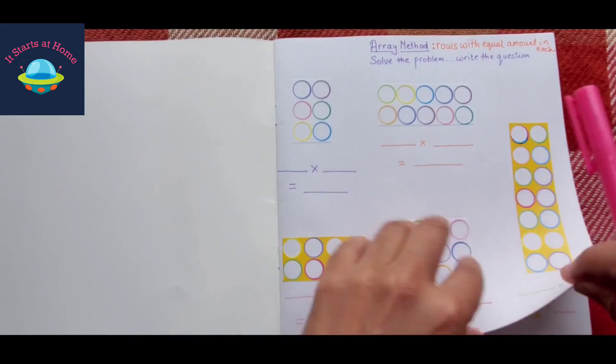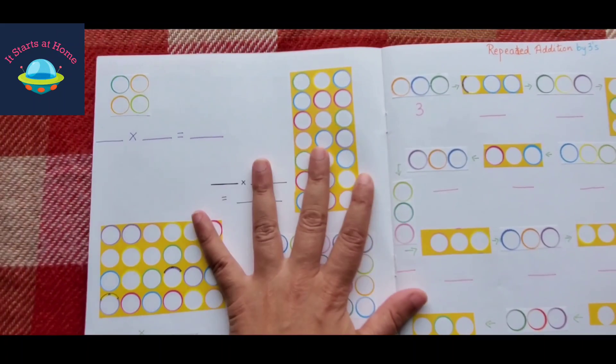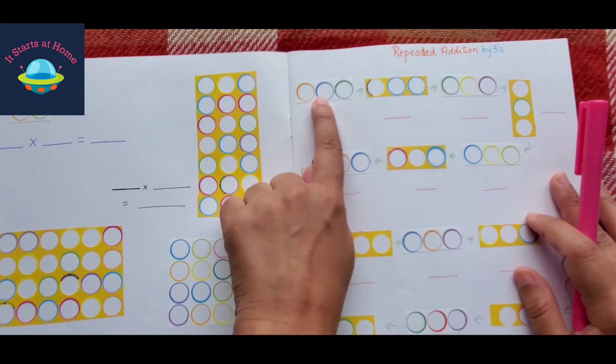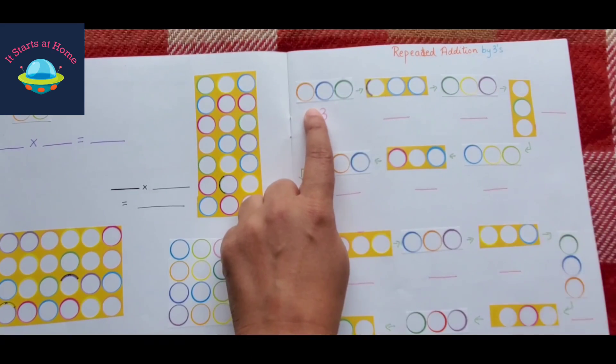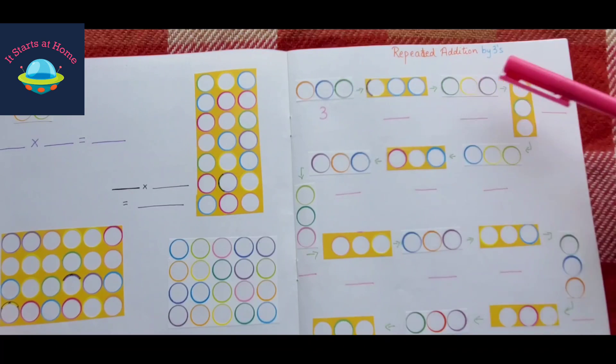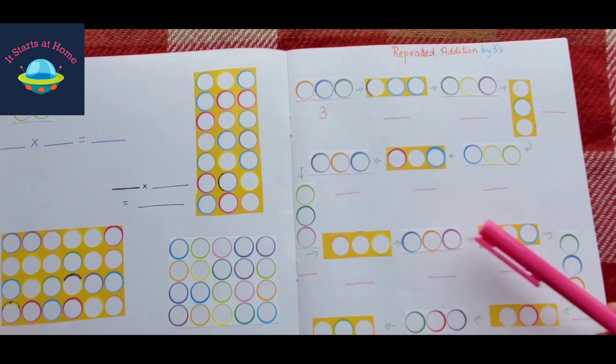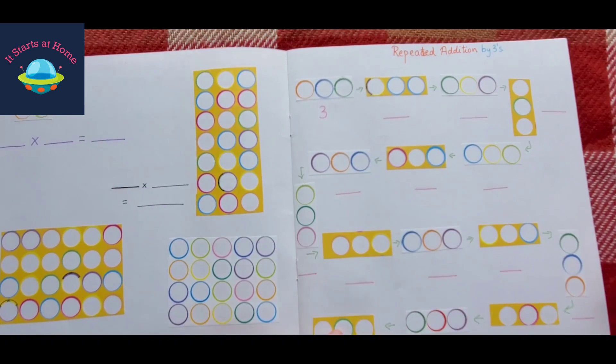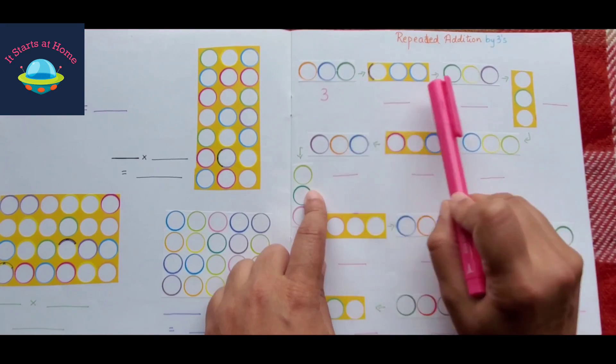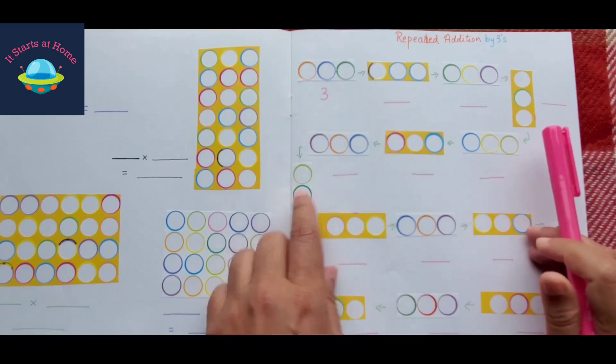You have 1, 2, 3, 4, 5, and I have cut that sticker in such a way that I'm using them to solve the array method. Then you have repeated addition by threes, so you have 3, 3, 3. The child needs to add, but at the same time they're multiplying. So you have 1, 2, 3, 4, 5, 6, 7, 8, 9, 10, 11, 12, 13, 14, 15, so 15 times they need to do to get the answer right here. The arrows also show the way they have to go.